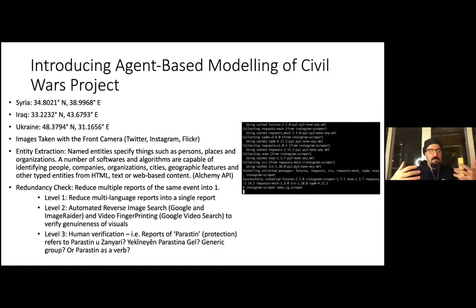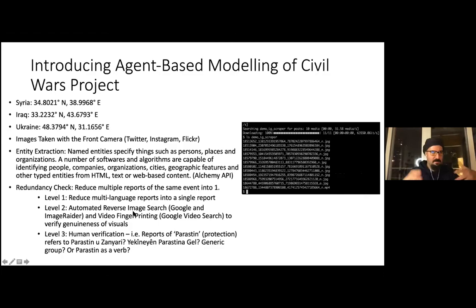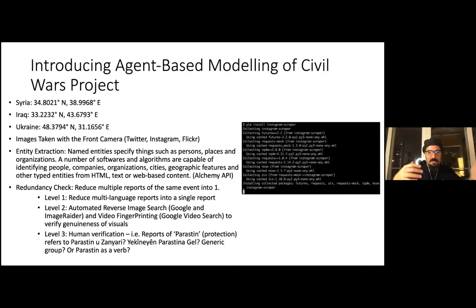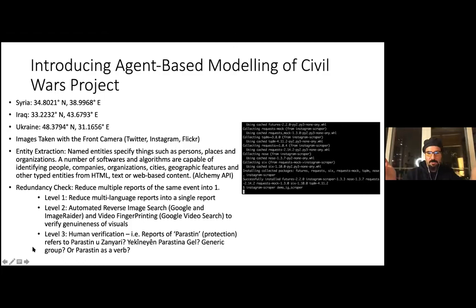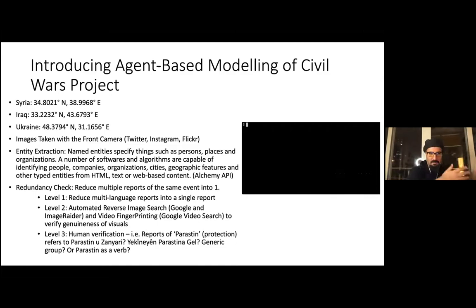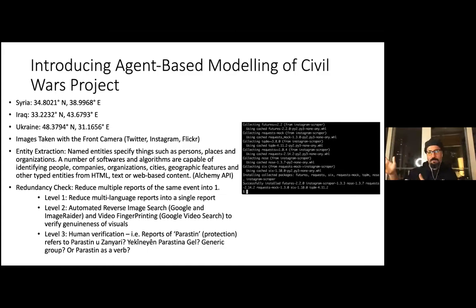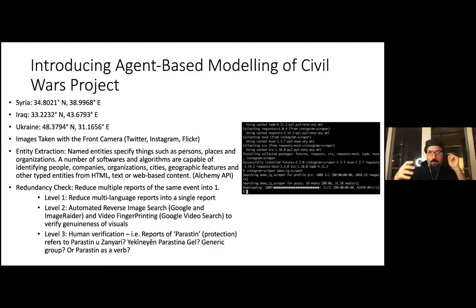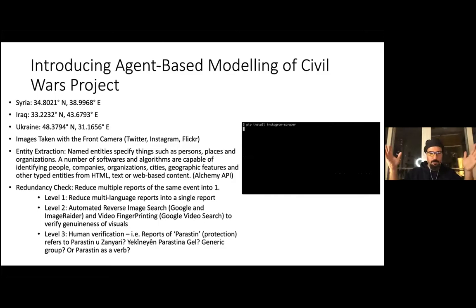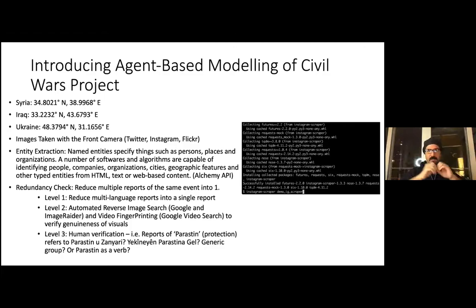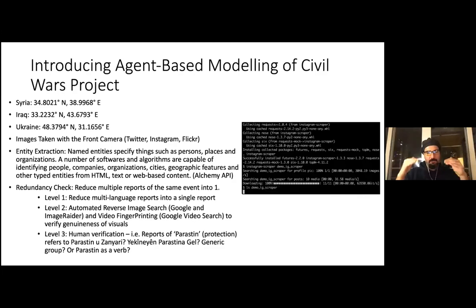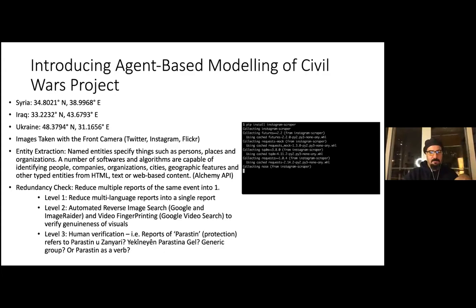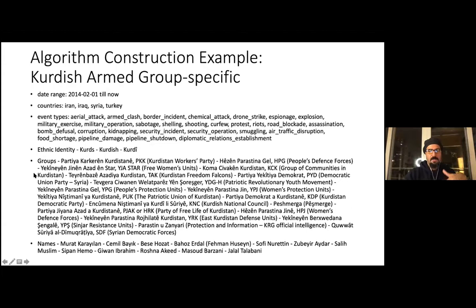At level three we run into the most difficult part of the redundancy check. For example, how do you code 'Parastin,' which means 'protection'? It can refer to Parastin-i Zanyari, which is an official protection group, an outlawed militant group, or a generic term that some youth group creates. We relied heavily on regional experts and assistants who speak the language and know the context. This is the most labor-intensive part of the process.